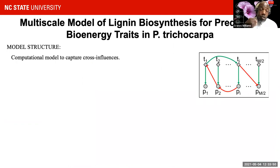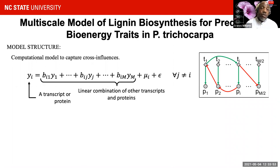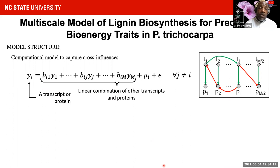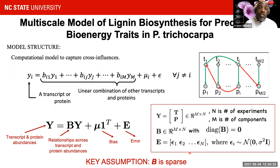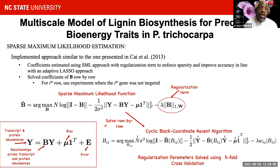For the transcriptome model, we used a sparse maximum likelihood approach to estimate parameters. We assumed all transcripts and enzymes could be formed using a linear combination where parameters B served as an indication of interactions across different components. We made specific assumptions such that a component could not contribute to itself — constraining the diagonal of B, the interaction matrix, to be zero — and assumed some level of noise associated with the process. Using maximum likelihood estimation, we were able to estimate values of this matrix B.